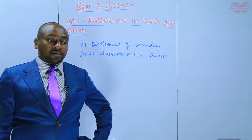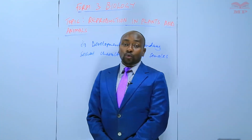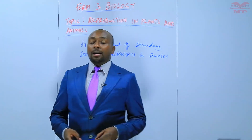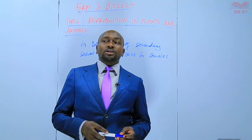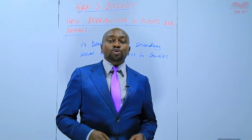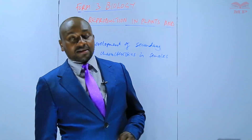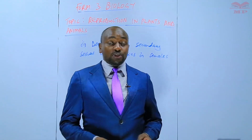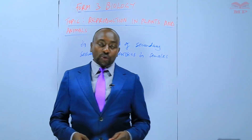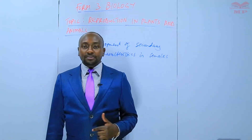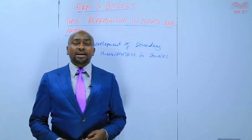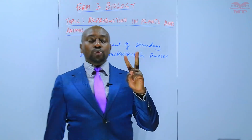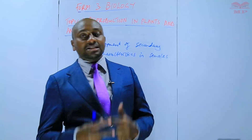Development of secondary sexual characteristics in females. When females reach puberty, which can come as early as 10 years — sometimes even at nine years — it is usually detected by the brain, a particular part known as the hypothalamus, that instructs the pituitary gland to release the follicle stimulating hormone. Another hormone that is also released is the luteinizing hormone. The hypothalamus detects and then triggers the pituitary gland to release the gonadotrophic hormones — that is follicle stimulating hormone and luteinizing hormone.